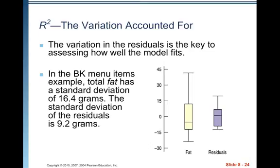R squared, the variation accounted for. R squared, the R is capitalized, but it is the correlation squared. The variation in the residuals is key to assessing model fit. In the BK menu items example, total fat has a standard deviation of 16.4 grams. The standard deviation of the residuals is 9.6 grams. So you can see that the residuals have quite a bit less variability than the original data, the original Y values.